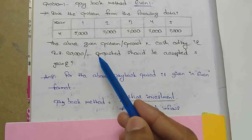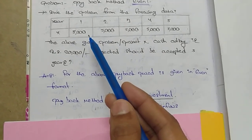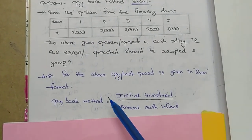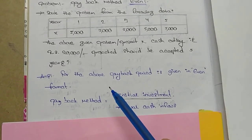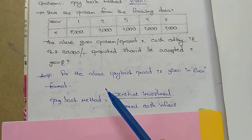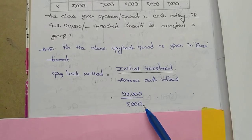For example, 20,000 divided by 5000 equals 4. The payback method calculation shows the total time is 20,000 divided by 5000 equals 4 years.